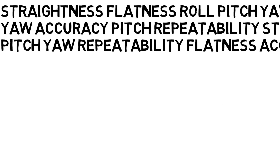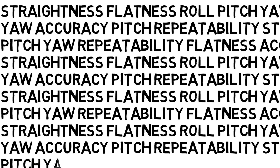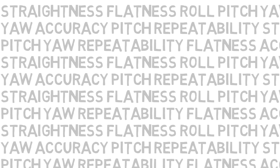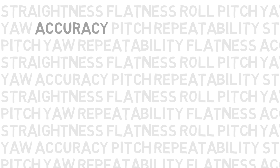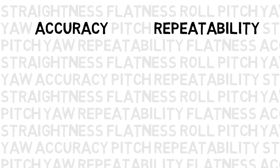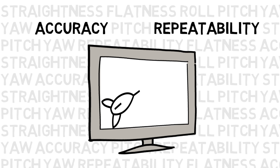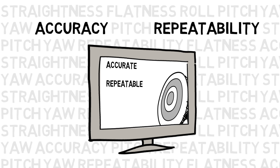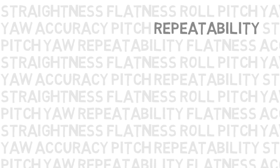There are many factors that affect the ability of a linear stage to position precisely in 3D space. Accuracy and repeatability errors were described in a previous installment of our Motion Control Basics series. This installment will focus on 5 other errors.